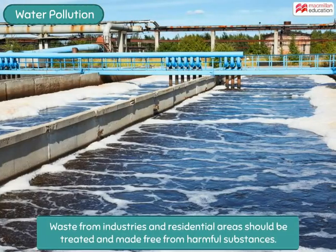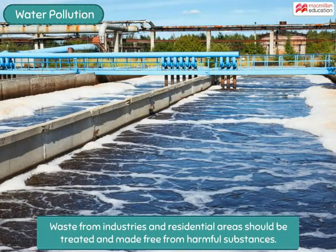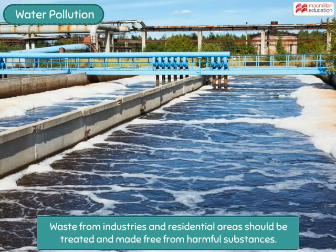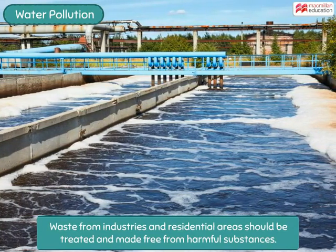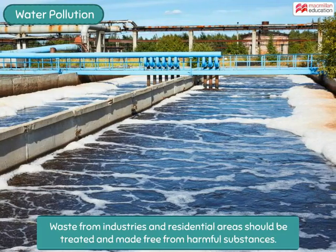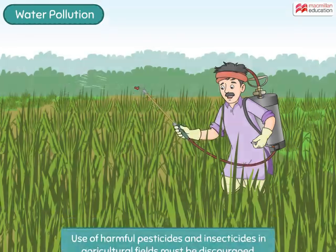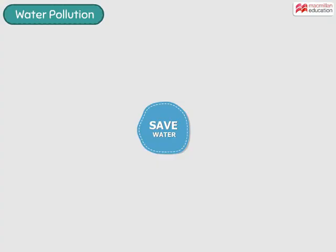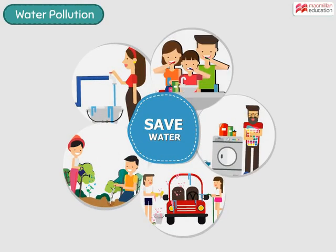Waste from industries and residential areas should be treated and made free from harmful substances before being discharged into water bodies. Use of harmful pesticides and insecticides in agricultural fields must be discouraged. We too should do our duty and avoid wastage of clean water.